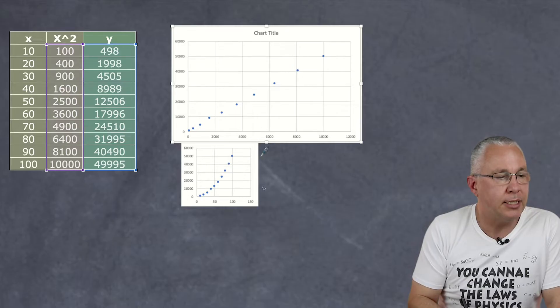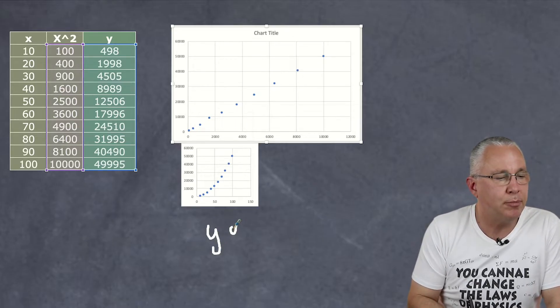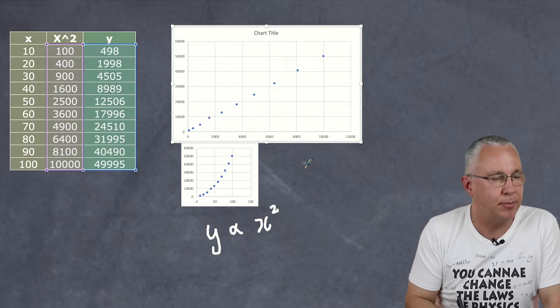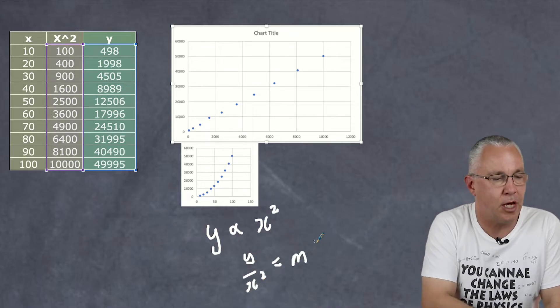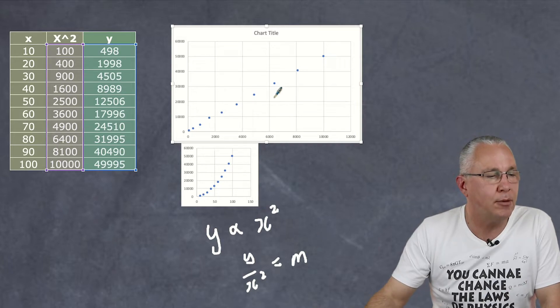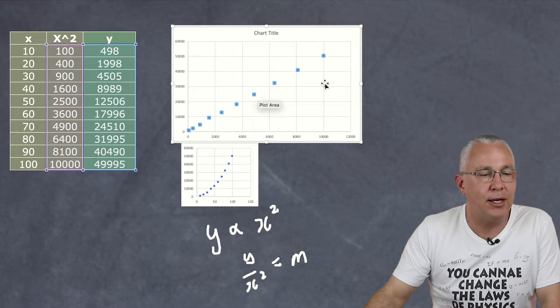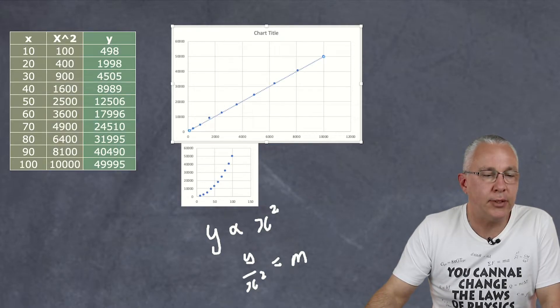And what that means is this because this is now linear I can say Y is proportional to X squared. Remember X squared is down the bottom. That means the slope Y over X squared is a constant value. It's a slope and of course I can work out that slope by determining the trend line.